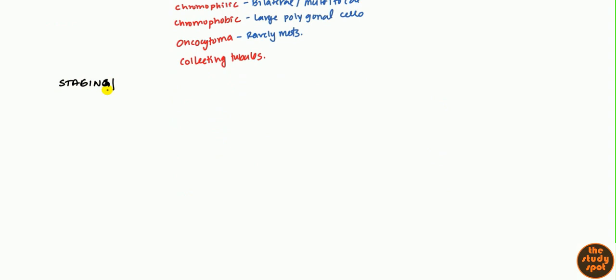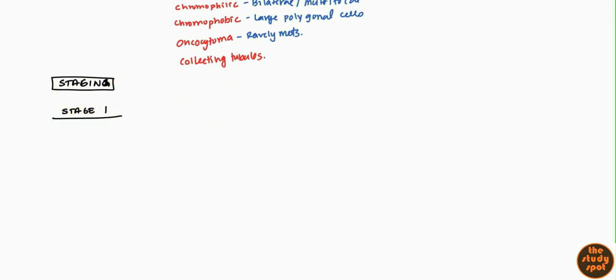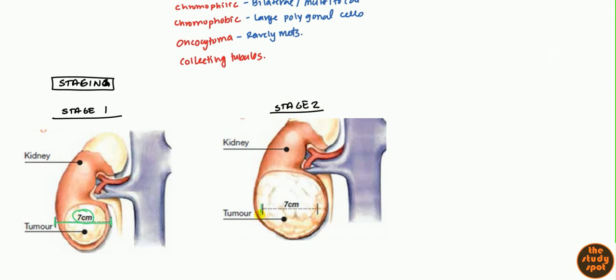After you've done the imaging, then we want to go into staging. Stage one is where you have a kidney which is less than seven centimeters. The length, what I just highlighted is seven centimeters. You can see the tumor is actually within the seven centimeter mark and it's all within the actual kidney. In stage two, the only difference is it's greater than seven centimeters. So it just takes up a larger proportion of the kidney. To summarize, less than seven centimeters within the kidney is stage one and greater than seven centimeters within the kidney is stage two.